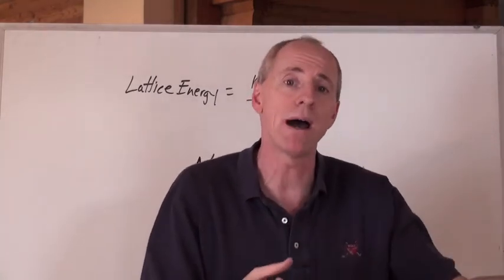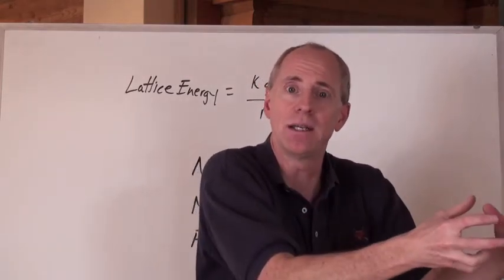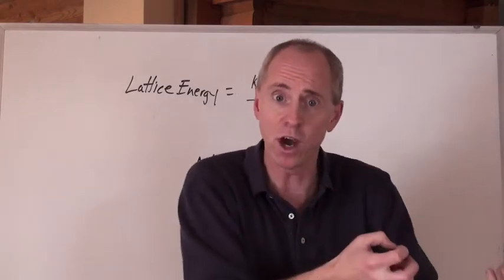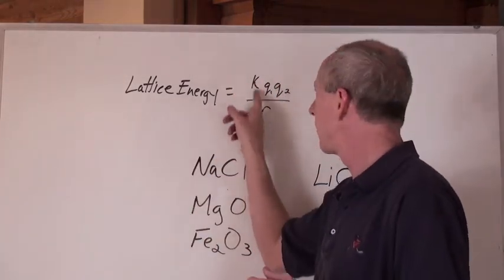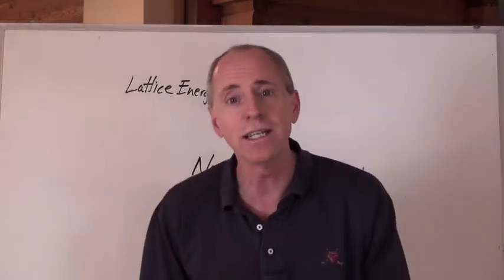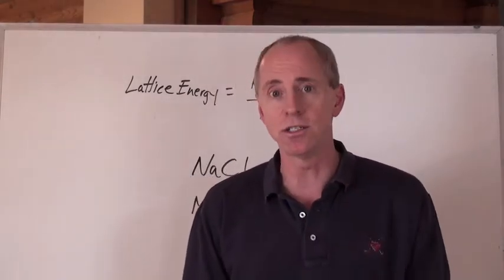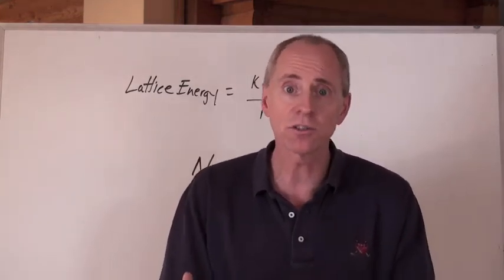You can actually describe how much, relatively, that energy is going to be coming off for different compounds by just looking and considering this formula here, and really you don't have to worry about the k because it's a constant. So it's really q and q which are actually the ionic charges.